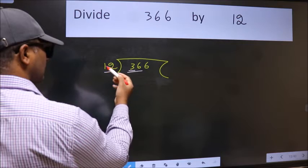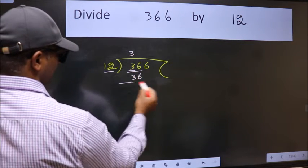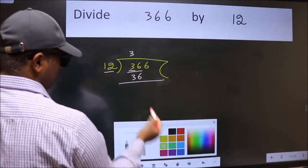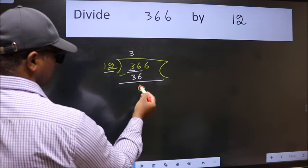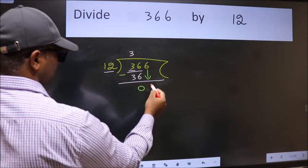When do we get 36 in 12 table? 12 threes, 36. Now we should subtract. We get 0. After this, bring down the next number, so 6 down.